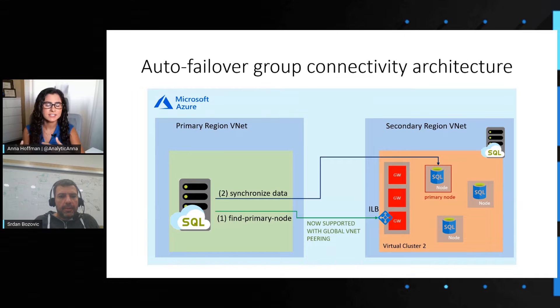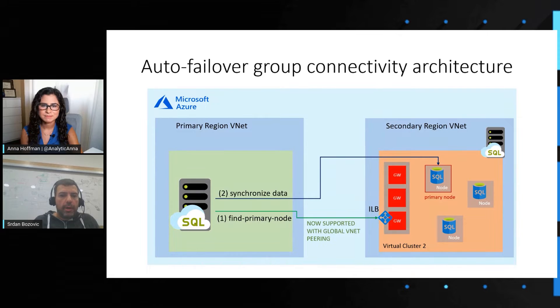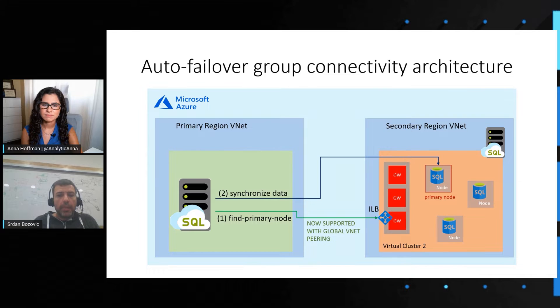Global VNet Peering has been available in Azure Virtual Machines for a while now. Can you give us the inside look at what challenges you had to solve in order to unlock this for managed instance? This is a really good question, and I prepared a diagram to help answer that. As you can see on this diagram, managed instance is a complex setup. It contains a virtual cluster that has VMs that have Global VNet Peering enabled, but it also has a load balancer. What we did as part of our improvement for managed instance was enable Global VNet support for this load balancer, so that the VMs could be accessed across the Global VNet Peering connection.